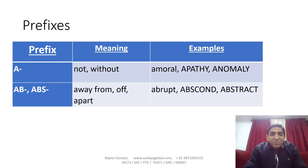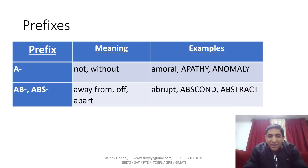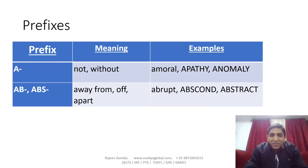For example, 'a-' is a prefix which means 'no' or 'not' — 'amoral' means not moral, 'apathy' means lack of any feelings, 'anomaly' means not normal. Similarly, 'ab-' or 'abs-' means away — 'abrupt' means sudden, 'abscond' means to run away, 'abstract' means away from structure ('struct' being structure), so abstract means away from structure.